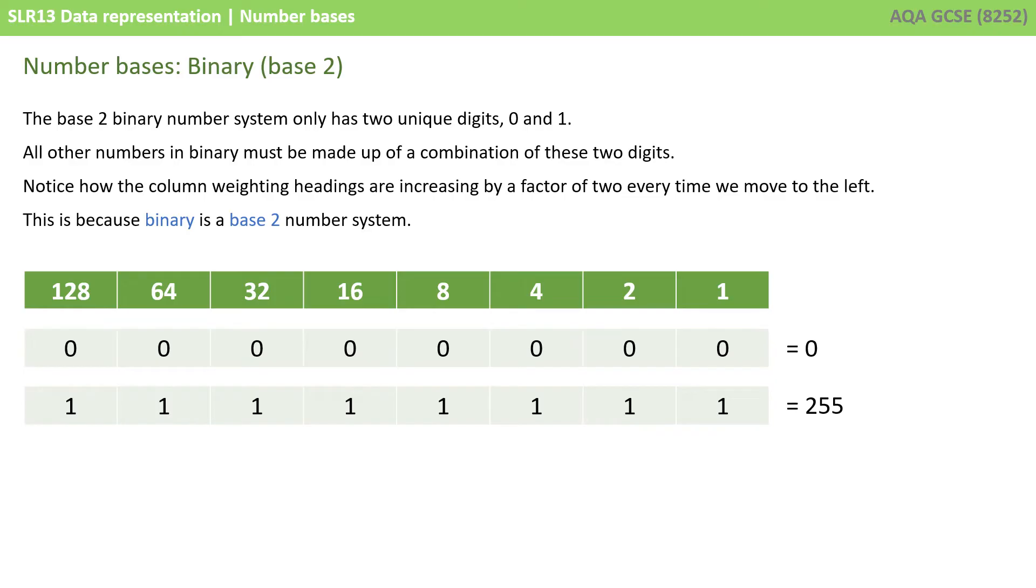This means there's a range of numbers that you're going to be expected to know about at GCSE in base 2 binary. The smallest number involves putting a 0 in every single column, and of course, that represents 0. The biggest number possible would be putting a 1 in every single column. So, that would be 128 plus 64 plus 32 plus 16 plus 8 plus 4 plus 2 plus 1, and that's 255 in decimal.